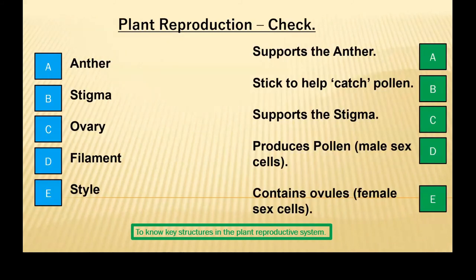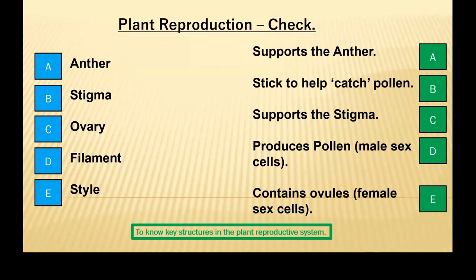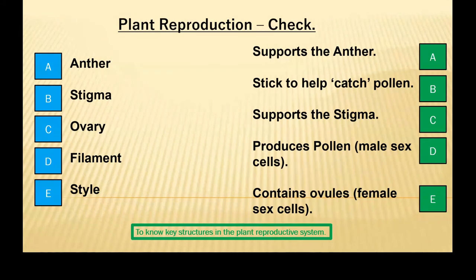So, our first check phase for the first lesson objective. What I'd like you to do is match up — it was originally meant to be letters on one side and numbers on one side. What we're just going to have to do is match up blue A to green A instead. In the chat, if you believe that anther contains ovules, you will say blue A, green E. Try and do all five into one answer.